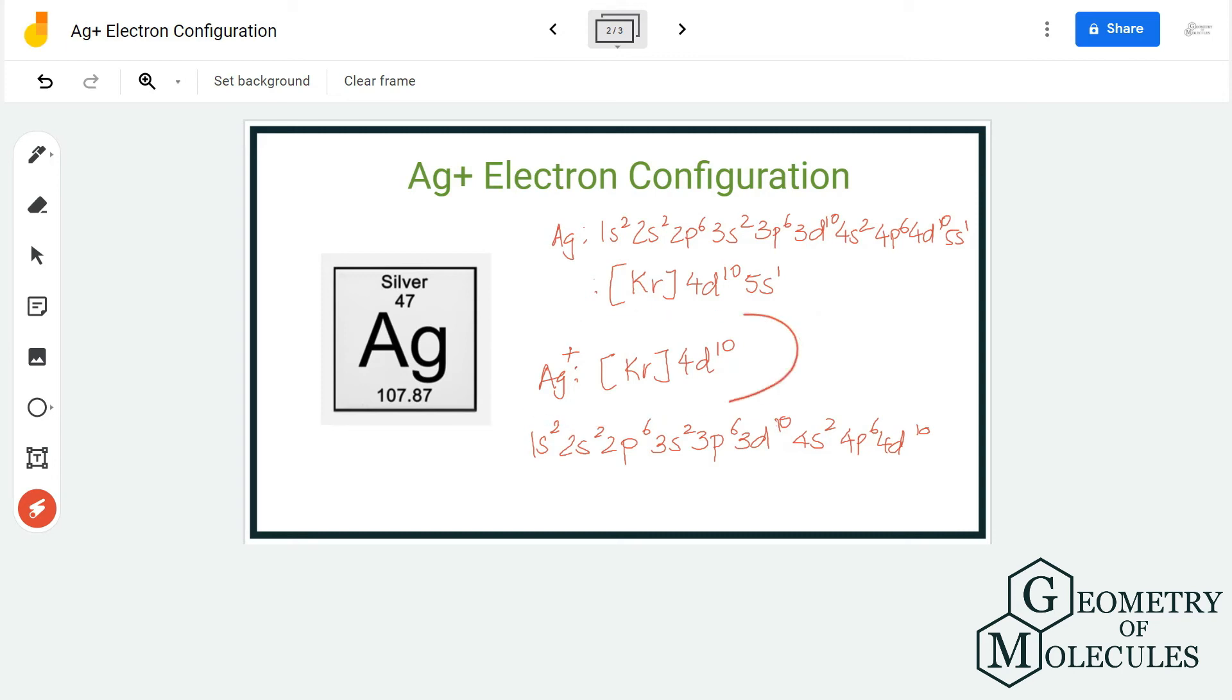There is no 5s1 because it loses one electron from the 5s orbital. To expand it further, the electron configuration of Ag+ is 1s2 2s2 2p6 3s2 3p6 3d10 4s2 4p6 4d10.